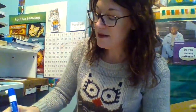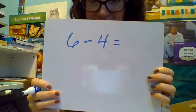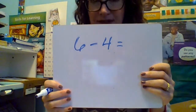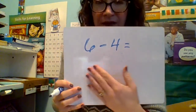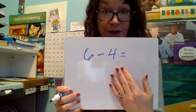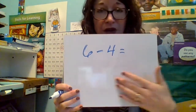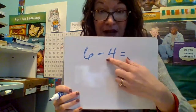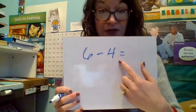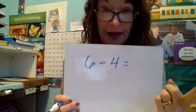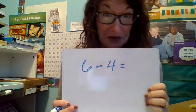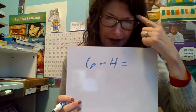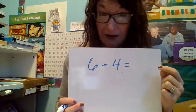So let's take the example — instead of 6 plus 4, let's take the example 6 minus 4. If you don't know this answer right away, you could use materials. You could draw 6 circles and cross 4 out, or you could use the counting on strategy. Today we're going to use the counting on strategy, so we're not going to be drawing any pictures.